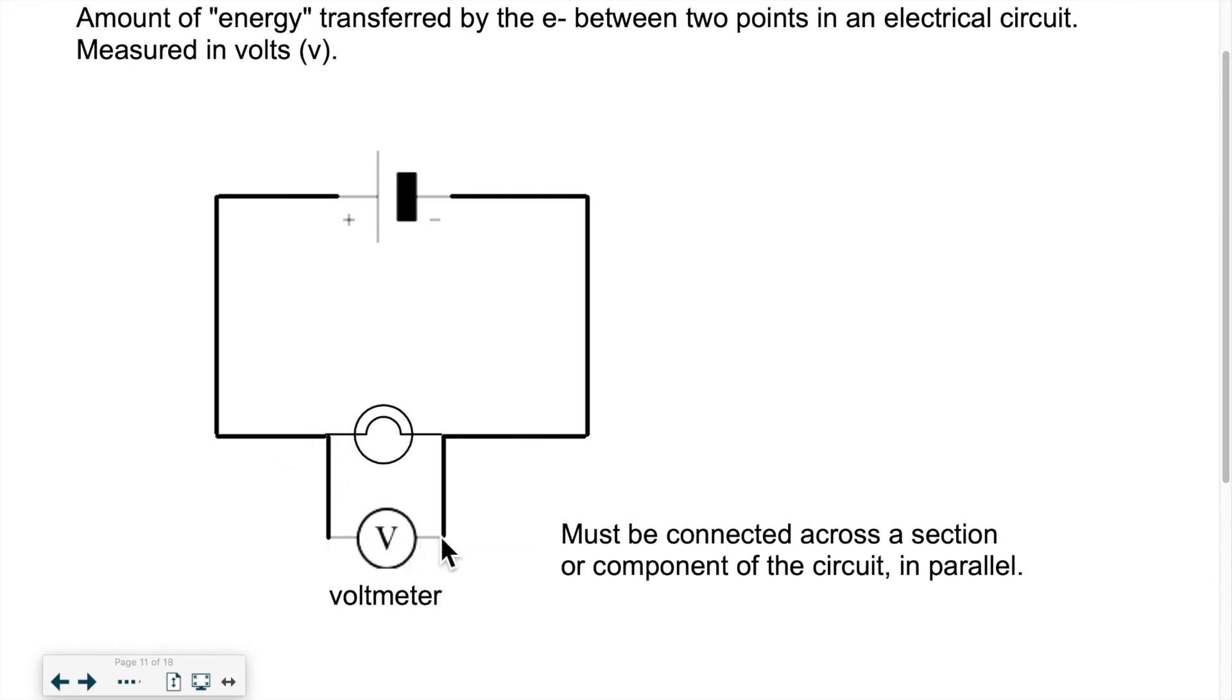That's why the voltmeter is connected in what we call parallel. It's as if there's an alternate path. When there's a parallel circuit, we have various paths for the electrons. The voltmeter is connected in parallel because you have two nodes. The electrons basically tell the voltmeter how much energy they have before they go through the light bulb and how much energy they have after.